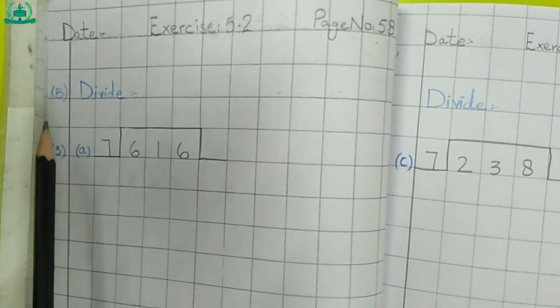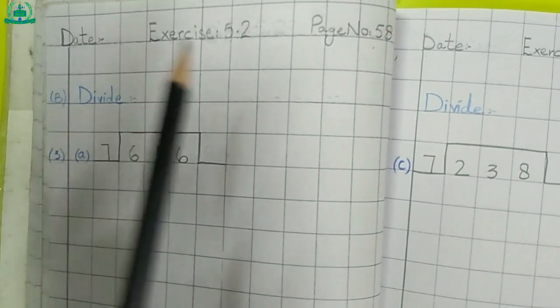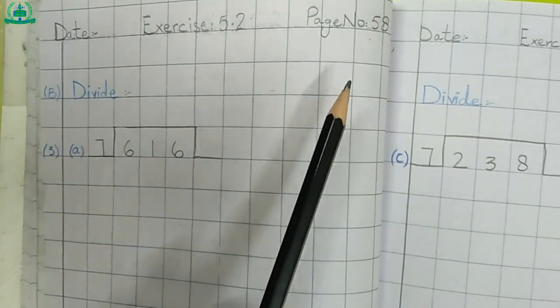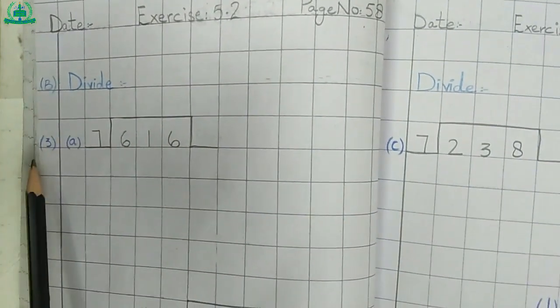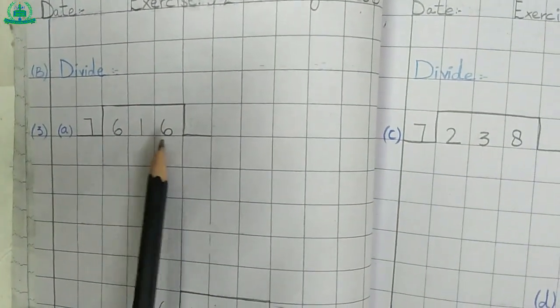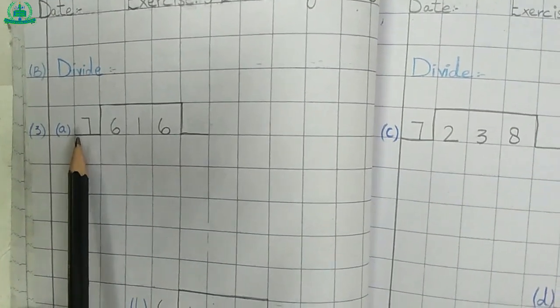Draw a margin line, mention the date, exercise number and page number. Part 3, question A: 616 divided by 7.